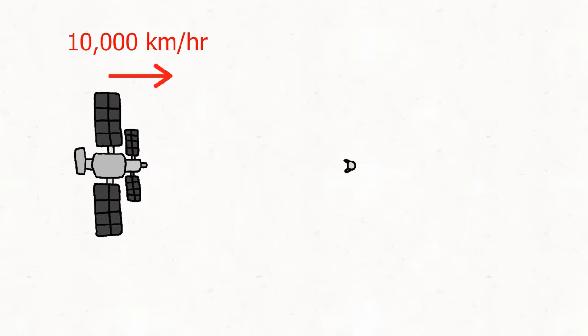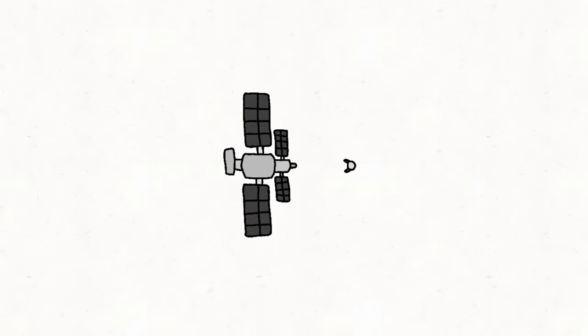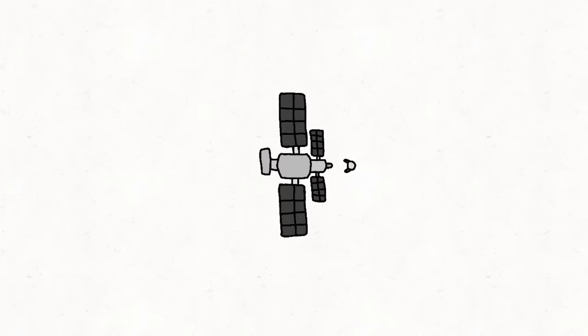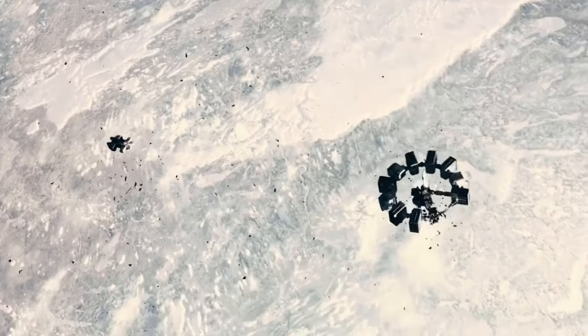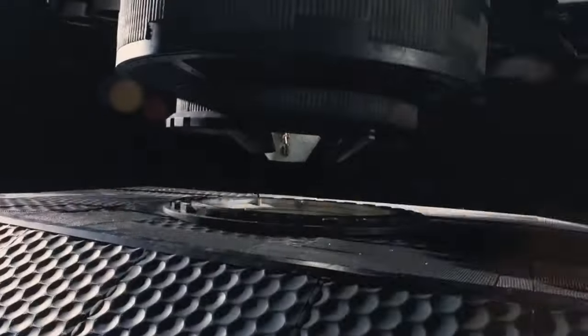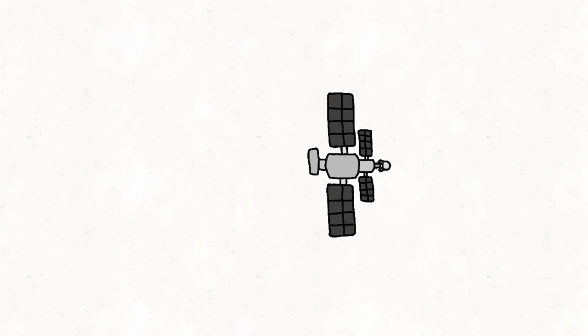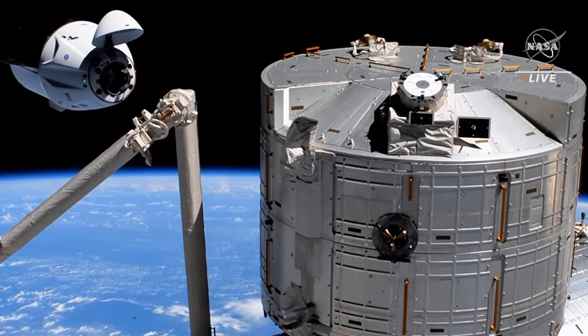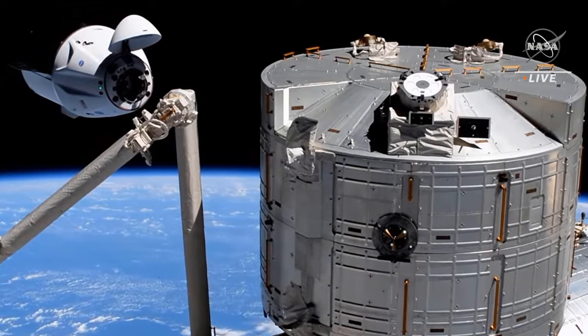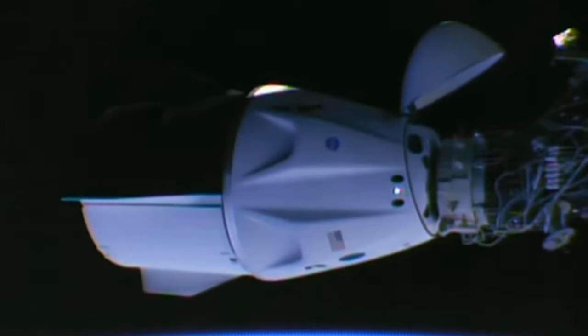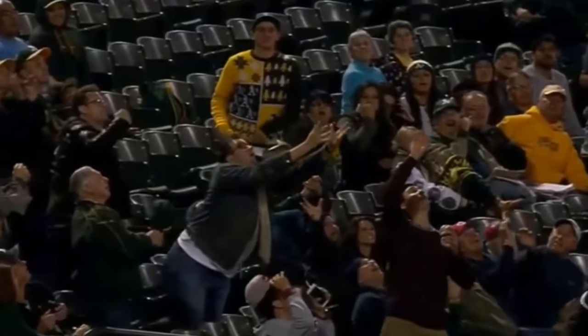Imagine this space station is traveling at 10,000 kilometers per hour in space and you want to dock onto it. Should you sit directly in its path and hope for the best? No, of course not. Instead, you'd pull a Matthew McConaughey and try to approach the velocity of the ship so you can slowly come together and gently lock in. Here's real footage of docking to the International Space Station, but even this is sped up at 10 times speed.